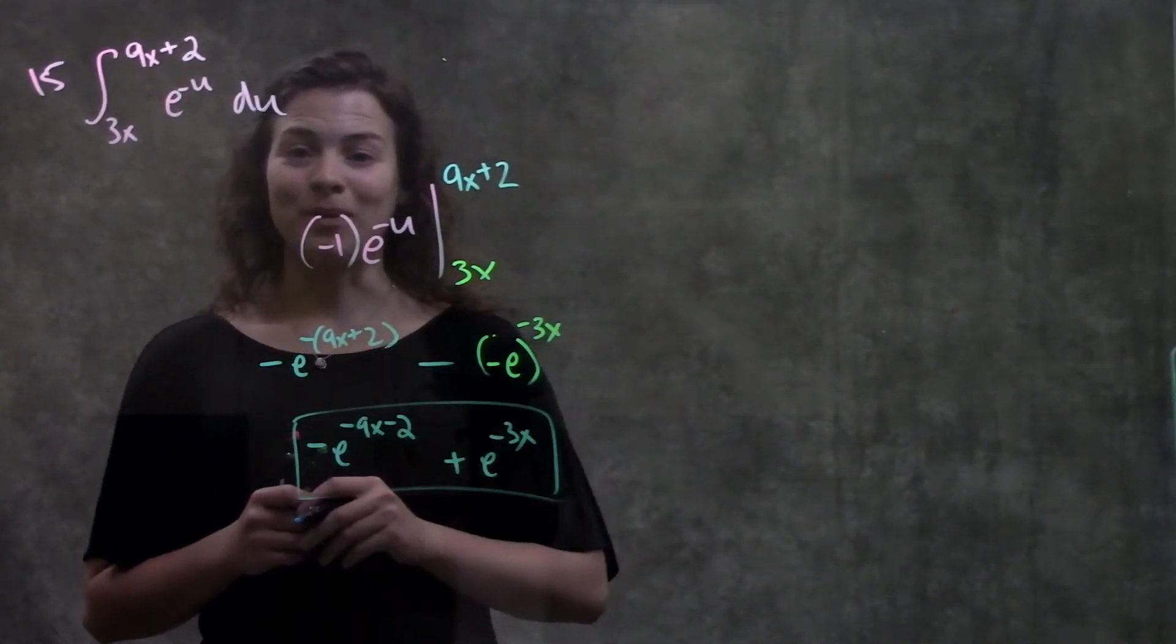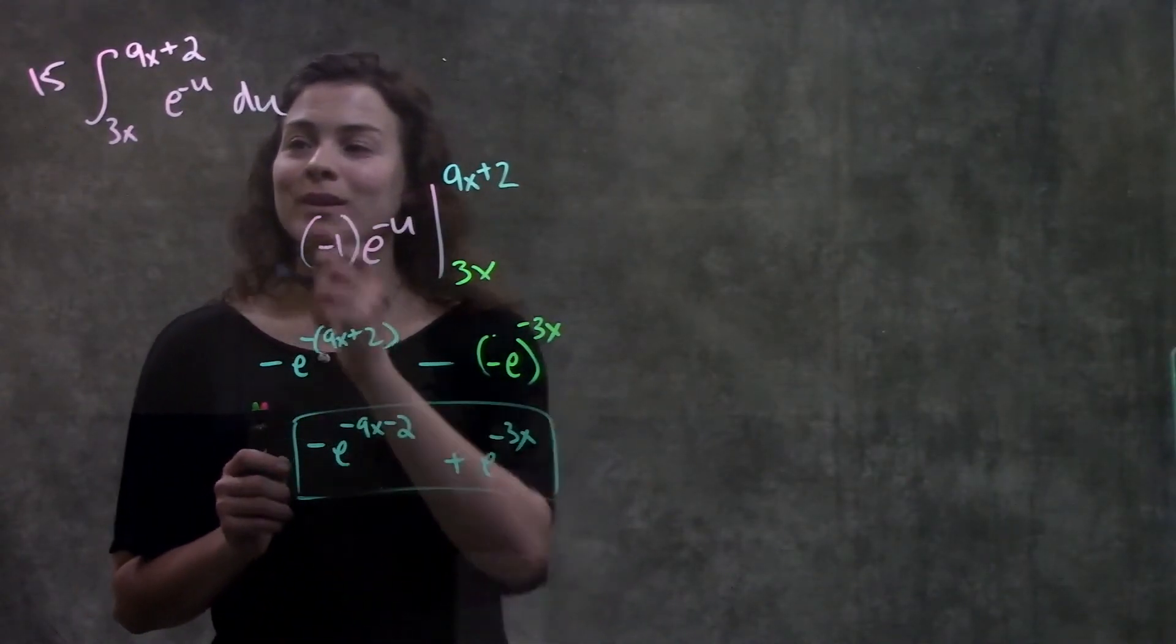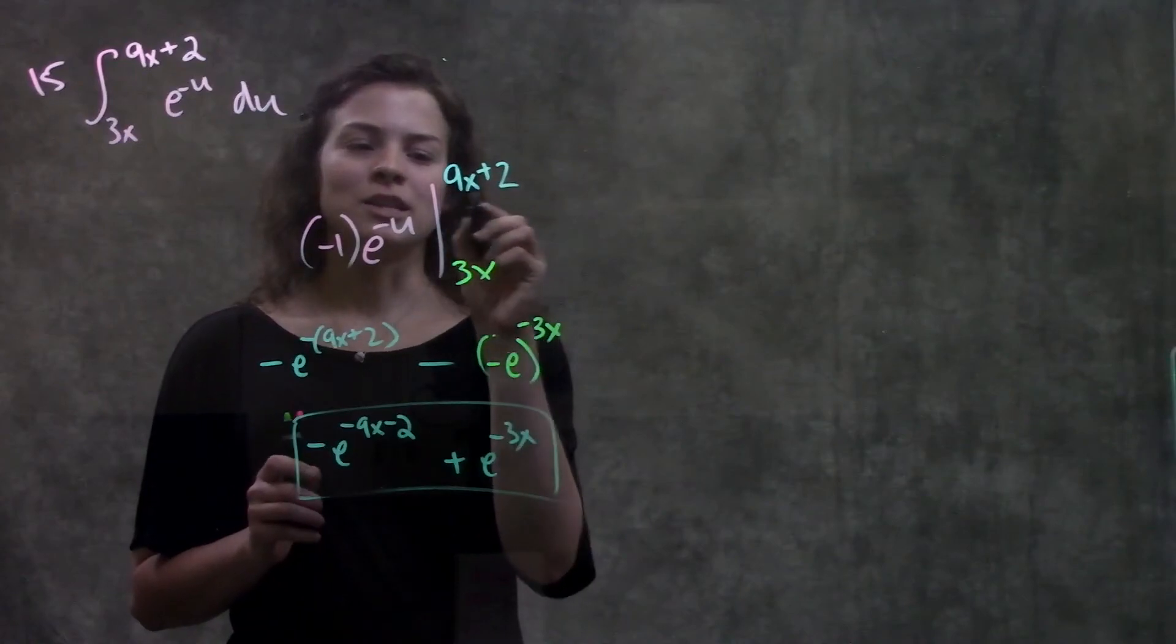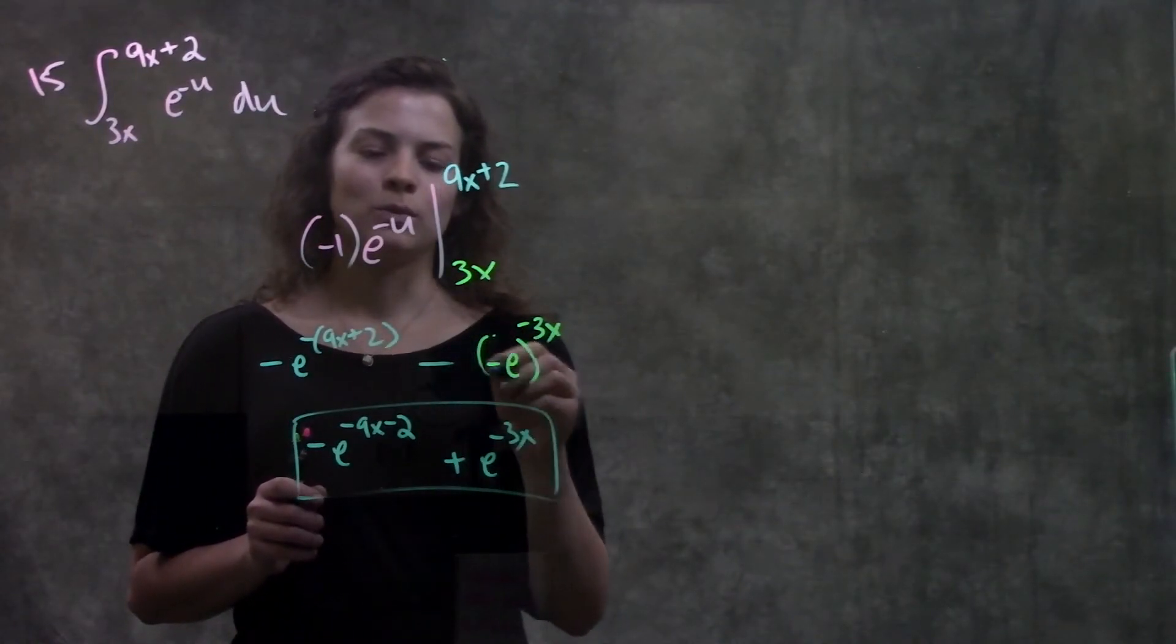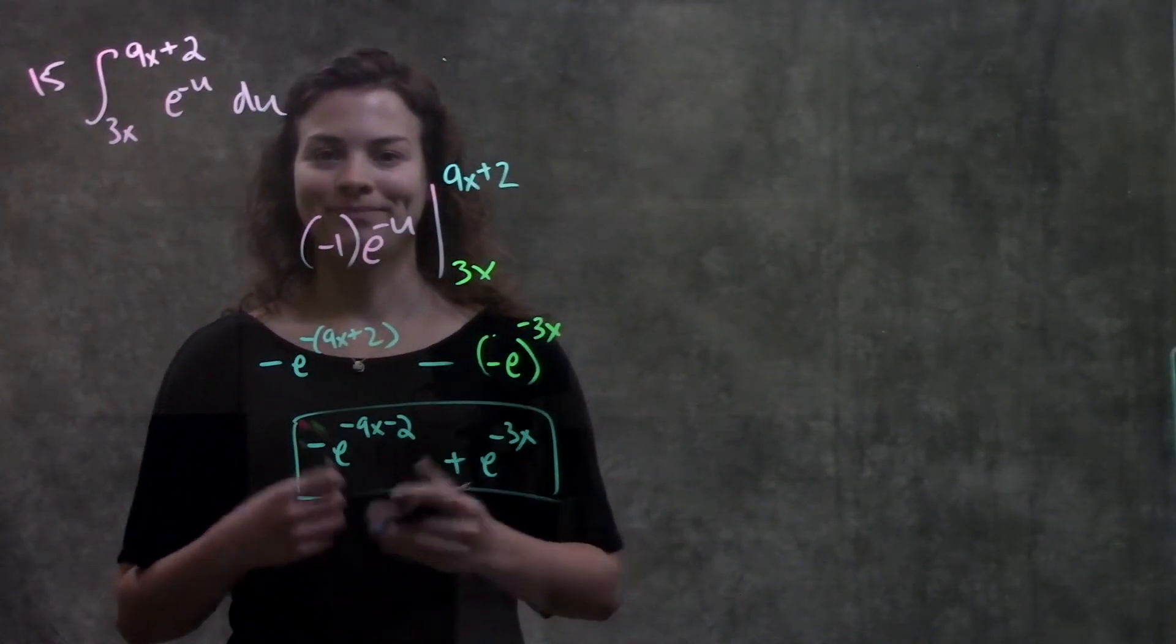And that's it for this problem. Same process as before. We start by taking the integral, then just plug in our top number, and then subtract whatever we get when we plug in our bottom number. And that's it.